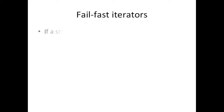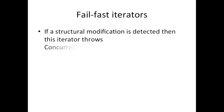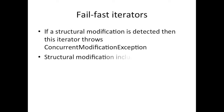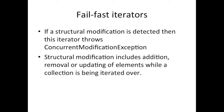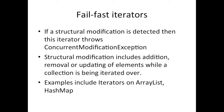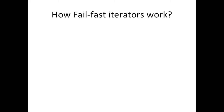Fail-fast iterators: if a structural modification is detected, this iterator throws a ConcurrentModificationException. By structural modification we mean addition, removal, or updating of elements while a collection is being iterated over. Examples of these type of iterators include the iterator on ArrayList and that of HashMap.